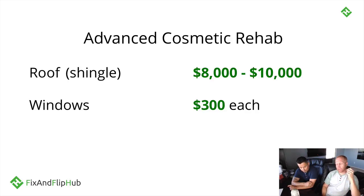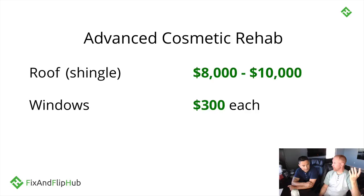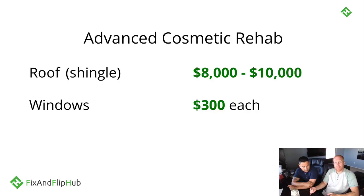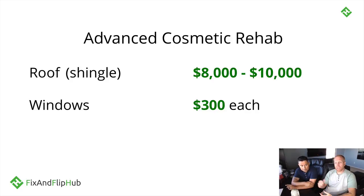With roofs, if you're rehabbing a house with a tile roof you probably won't need to replace it — most tile roofs last 30 to 50 years. The asphalt shingle roof is what we run into most. The $8,000 to $10,000 figure is an estimate based on house size — we paid $6,600 on an 1,100 sq ft house in Tempe and about $8,000 on a 2,200 sq ft house on 14th Street. These are rough estimates, but we're sharing them because we get a lot of questions.